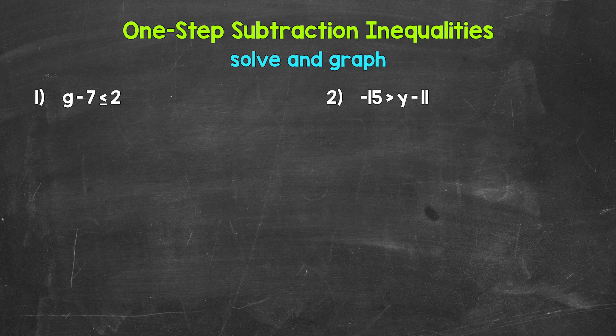When we solve inequalities, we want to isolate the variable — get it by itself on one side of the inequality. We do that by using inverse operations, opposite operations. So this is just like when we solve equations. Once we solve the inequality, we can graph the solutions — all of the values that make the inequality true.